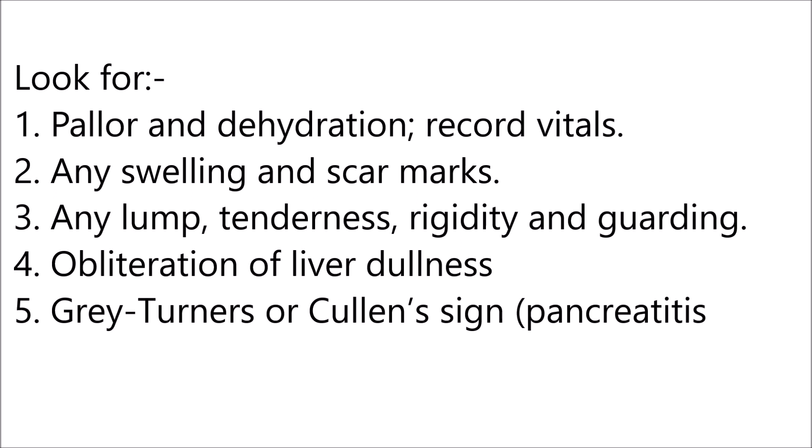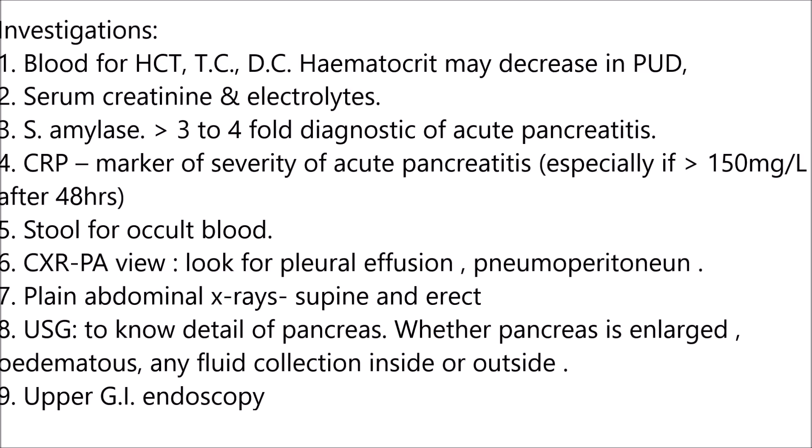In epigastric pain, look for bleeding, obliteration of liver dullness, colon sign, or features of pancreatitis. For investigations: blood for hematocrit, total count, differential count — hematocrit may decrease in peptic ulcer disease. Serum creatinine and electrolytes. Serum amylase more than three to four fold is diagnostic of acute pancreatitis. CRP is a marker of severity of acute pancreatitis, especially if more than 150 mg per liter after 48 hours. Stool for occult blood. Chest X-ray PA view — look for pleural effusion and pneumoperitoneum. Plain abdominal X-ray supine and erect. Ultrasound to evaluate the pancreas — whether it is enlarged, and check for fluid collections inside or outside.